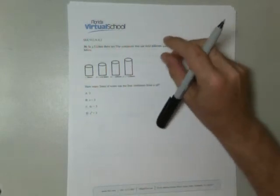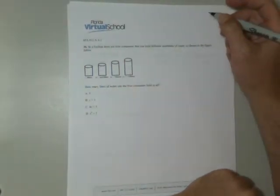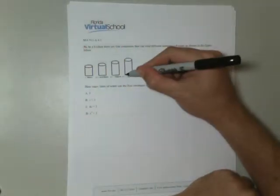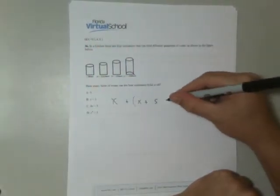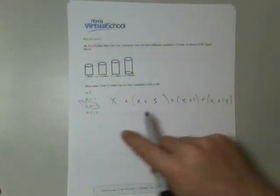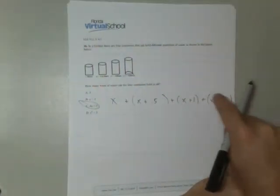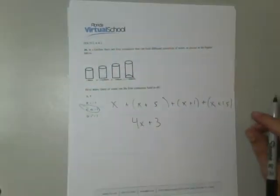In a kitchen there are four containers that hold four different quantities of water. How many liters of water can the four containers hold in all? I don't have to know the volume of a cylinder. All I have to do is add x plus (x + 0.5) plus (x + 1) plus (x + 1.5). That gives me 4x, and 0.5 plus 1 plus 1.5 is 3, so the answer is 4x plus 3.